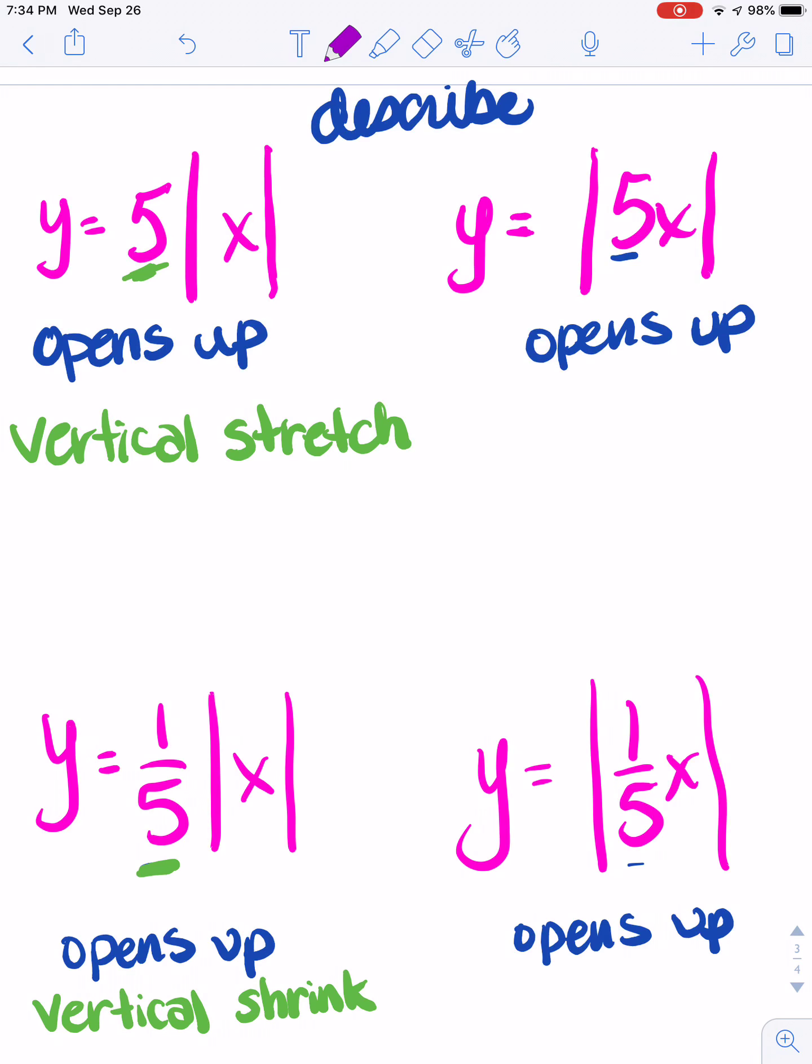Now if I look at the other ones, the number that's in front is actually inside the absolute value, which means that these are going to be horizontal. Let me just abbreviate so it fits here. Now because this number right here is greater than 1, that means it's going to be a horizontal shrink.